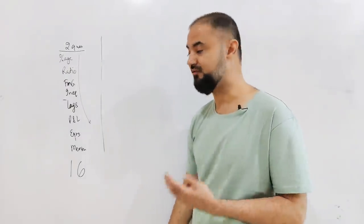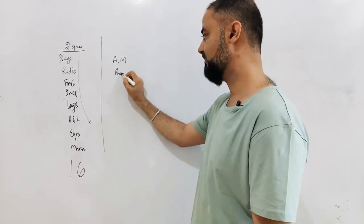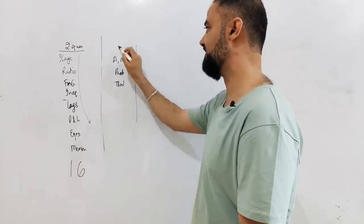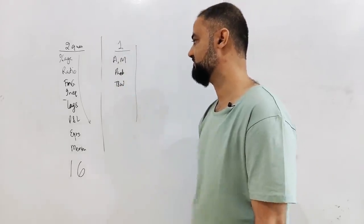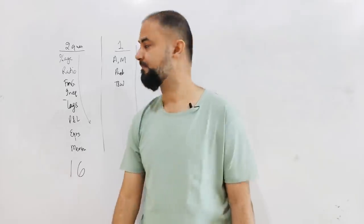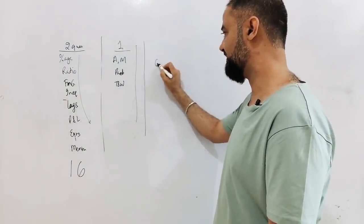Going to level two: averages, mixtures, probability, time and work. These are the three topics which are worth one question each and comparatively easy. Now the main problem starts at the higher level.